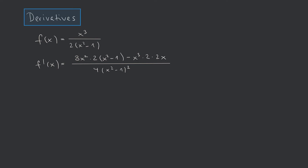We simplify by expanding brackets in the numerator: 6x⁴ − 6x² − 4x⁴ over (2x² − 1)². Combining expressions and reducing by 2, we get (x⁴ − 3x²) / (2x² − 1)².